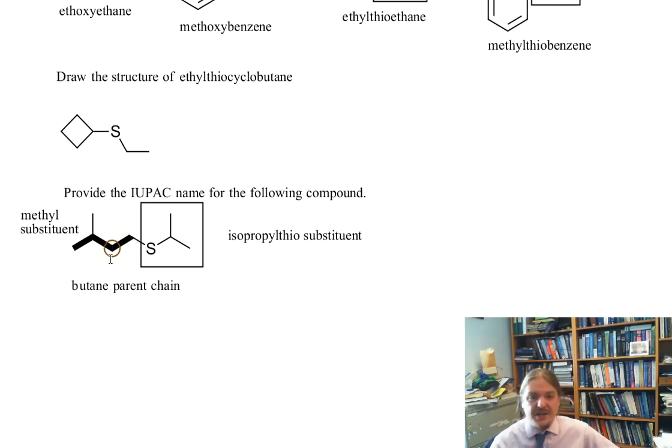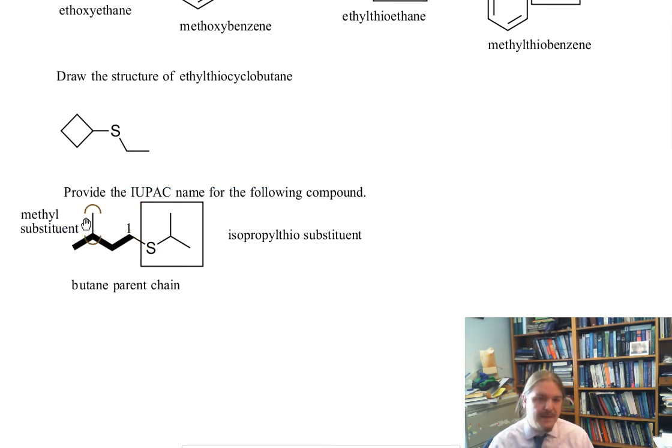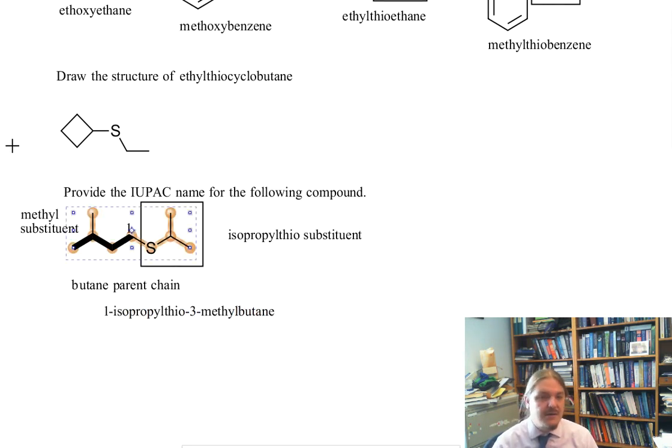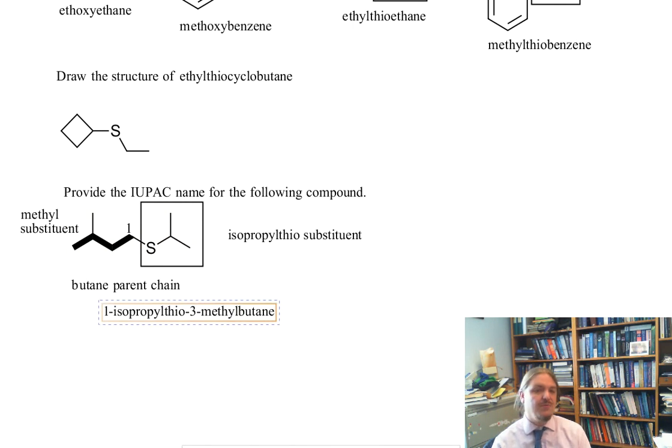We need to number our chain so that we have the lowest possible combination of locant values. And that would have the thio group at the number one position. So this is going to be the carbon one here. And then the methyl group will be at carbon three. And then we arrange the substituents alphabetically with isopropylthio being alphabetically before methyl. So this compound is going to be named 1-isopropylthio-3-methylbutane.